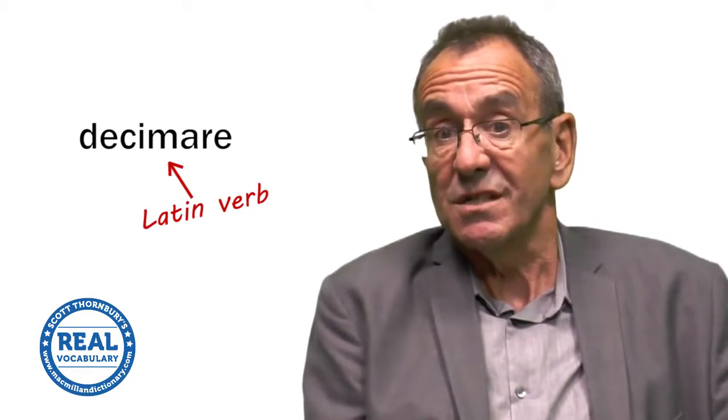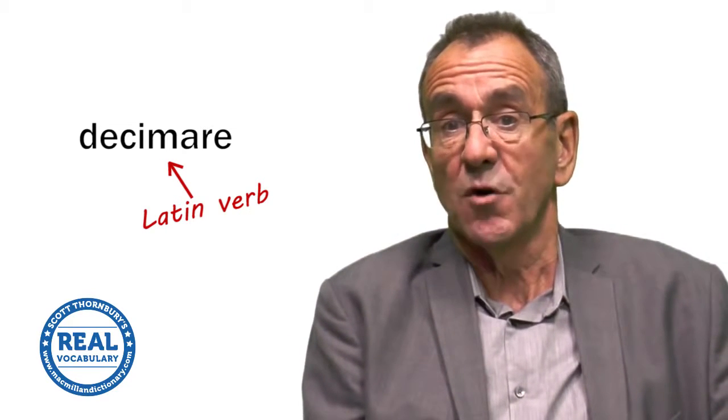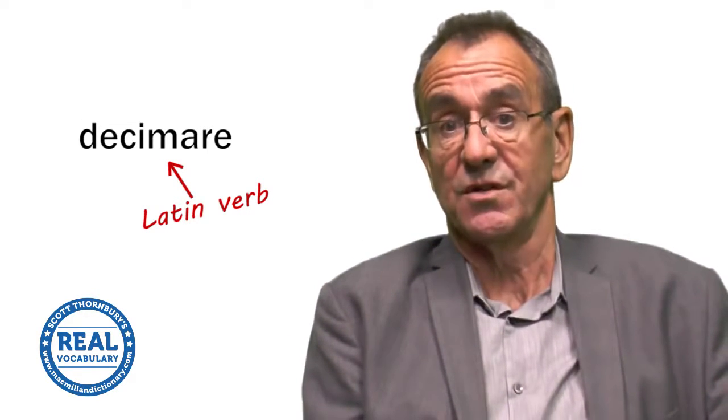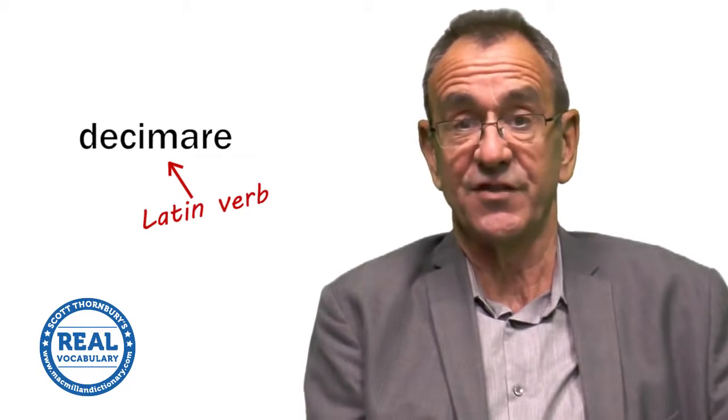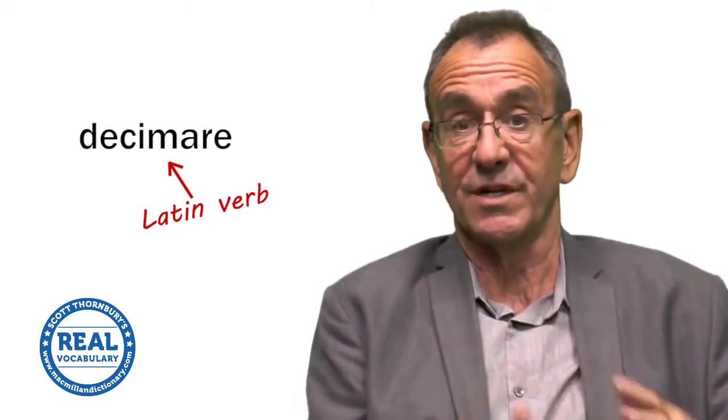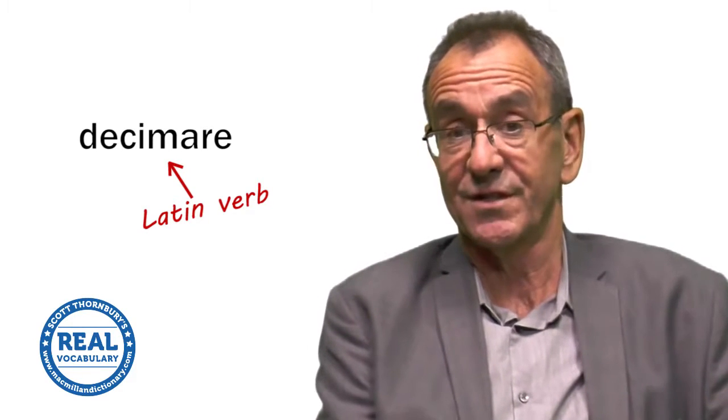Decimation, incidentally, was a form of punishment used in the Roman army if soldiers rebelled against their officers.